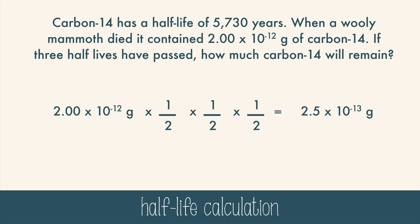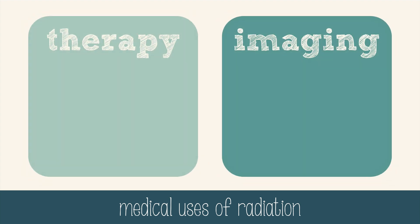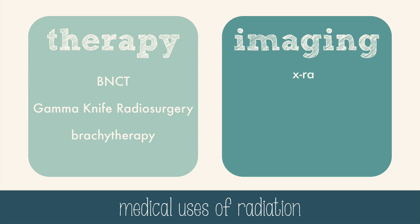This answer is smaller than the amount we started with, so it makes sense. In addition to dating long-dead organisms, radiation has many medical uses. The two main uses are therapy and imaging. Therapies use radiation to kill cancer cells and include boron-neutron capture therapy, gamma-knife radiosurgery, and brachytherapy. Imaging techniques include X-ray, CT scans, MRIs, PET, and SPECT scans. UV radiation is also used to sterilize equipment.